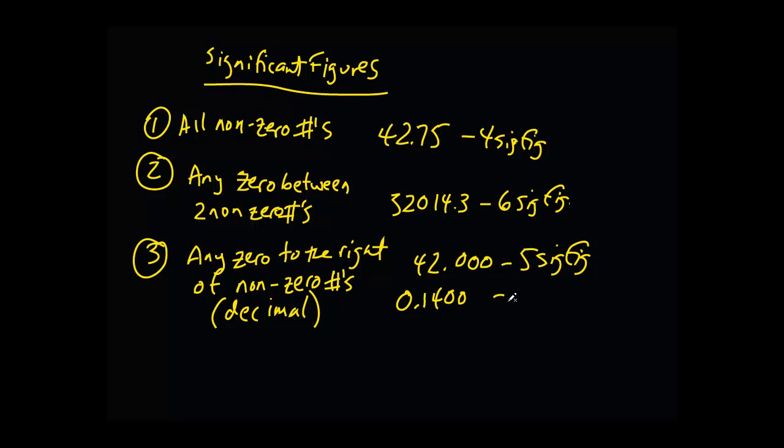It also means that 0.1400 would give us four significant figures, since we have two non-zeroes and two zeros to the right. This zero to the left is not significant because it's to the left.